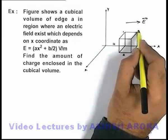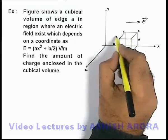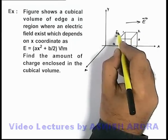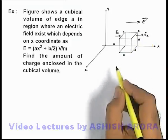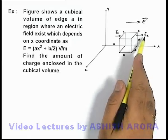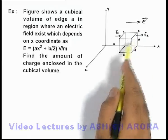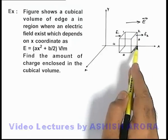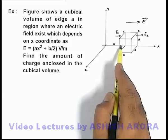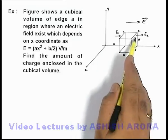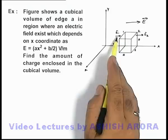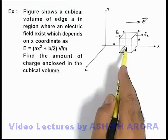If this is face 1 and this is face 2, then on face 1 electric field E1 exists and from face 2 electric field E2 is emerging out. For plane 2, the x coordinate is more than that of face 1, so E2 is more than E1. More flux is coming out compared to the flux getting into this cubical region.